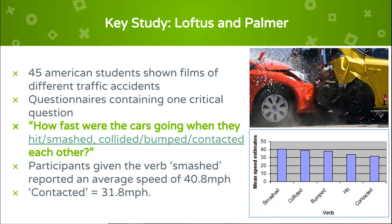Findings showed that the leading question affected the responses given. The verb implied information about speed, which systematically affected participants' memory of the accident. Participants given the verb 'smashed' reported an average speed of 40.8 mph, while participants given the verb 'contacted' reported an average speed of 31.8 mph.